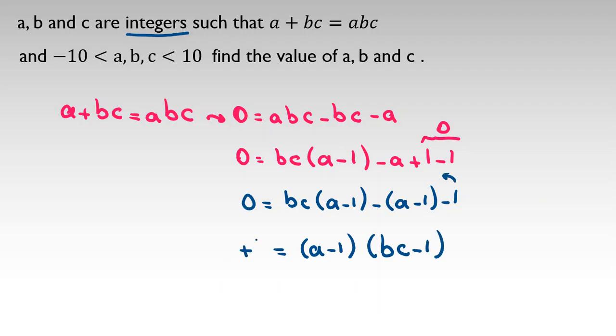So here I have two parts: (a - 1)(bc - 1) = 1. Their product is one. I consider both of them positive one times positive one, because they are integers, or negative one times negative one. So I should consider two cases.